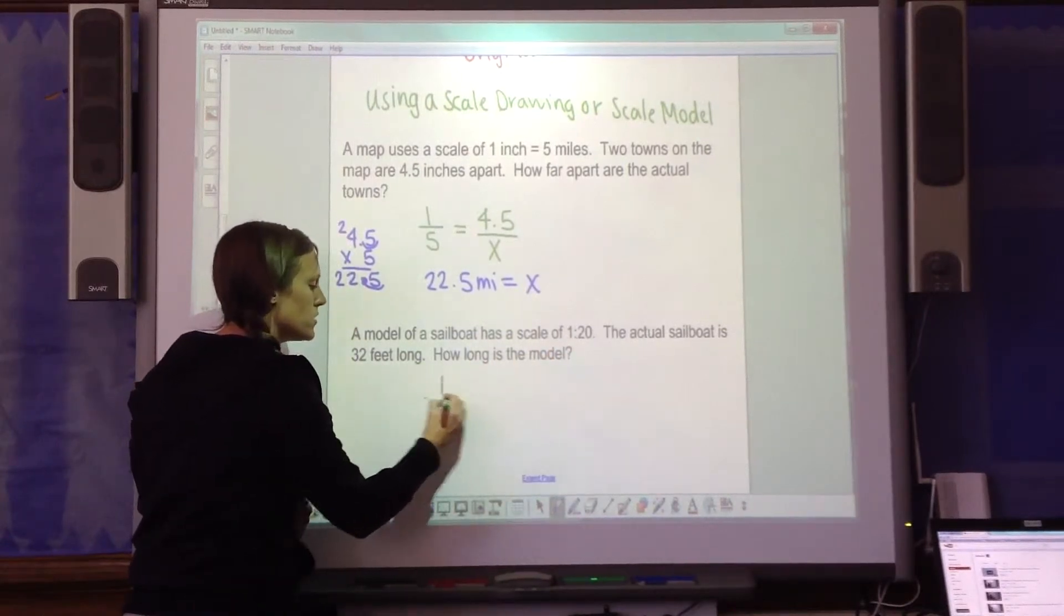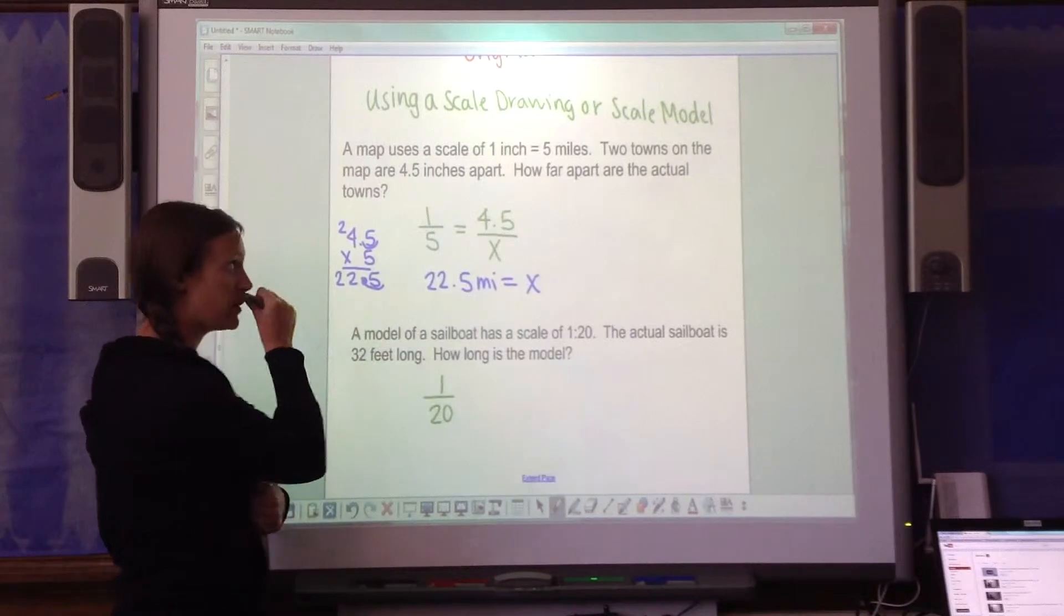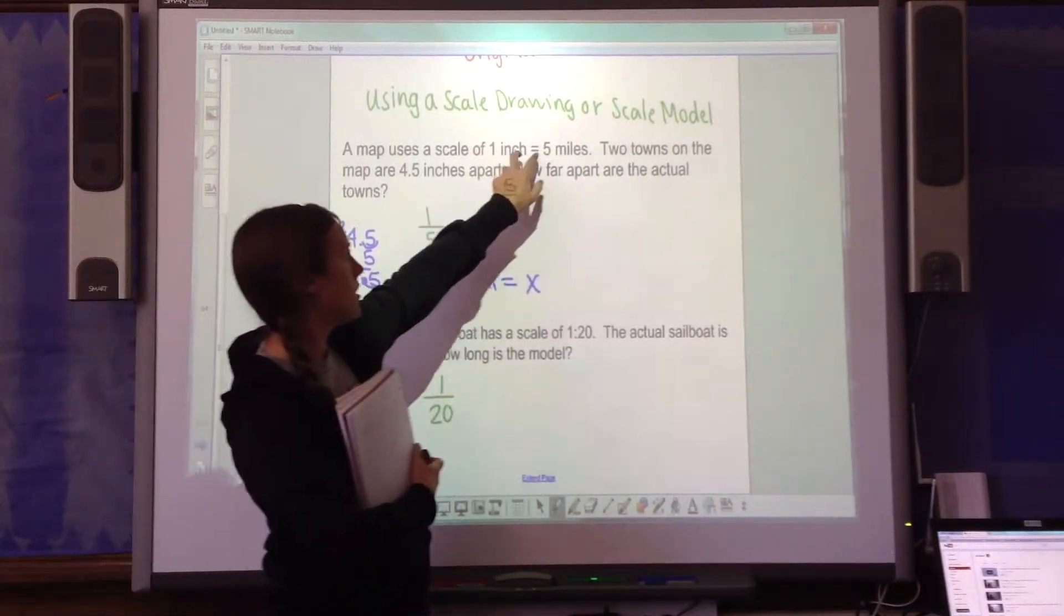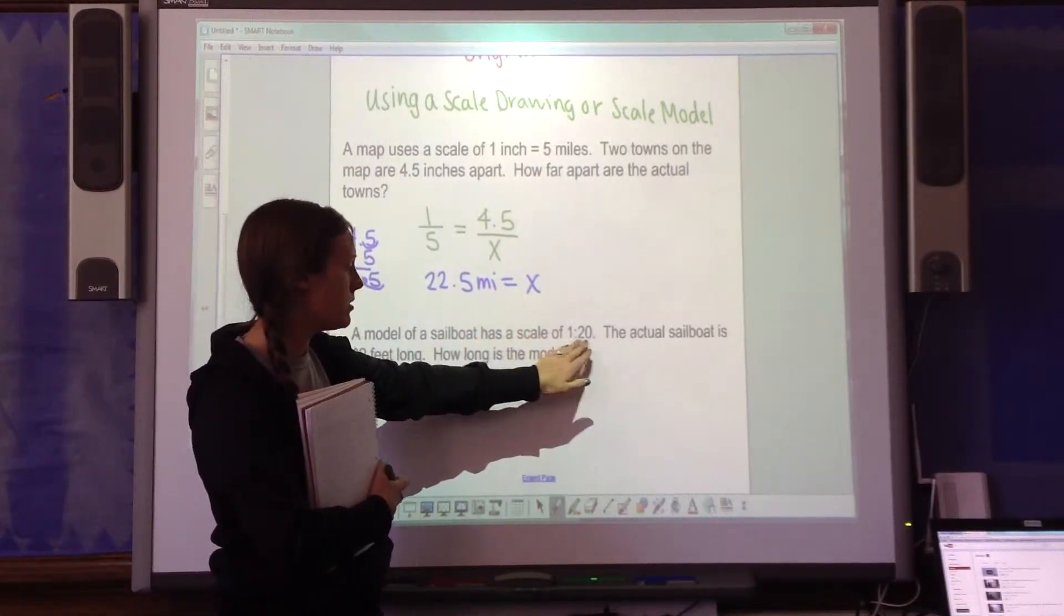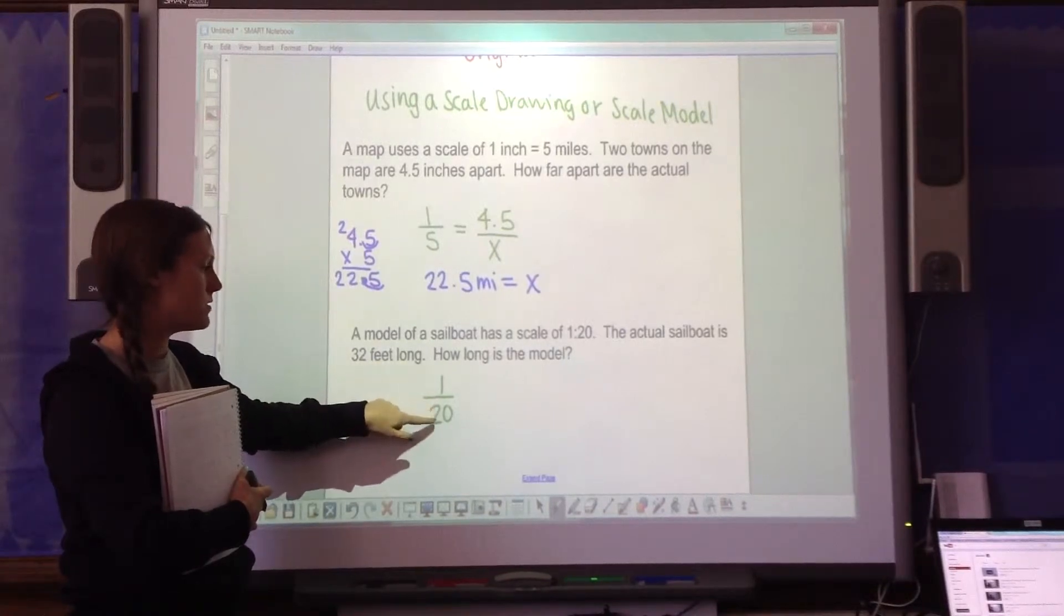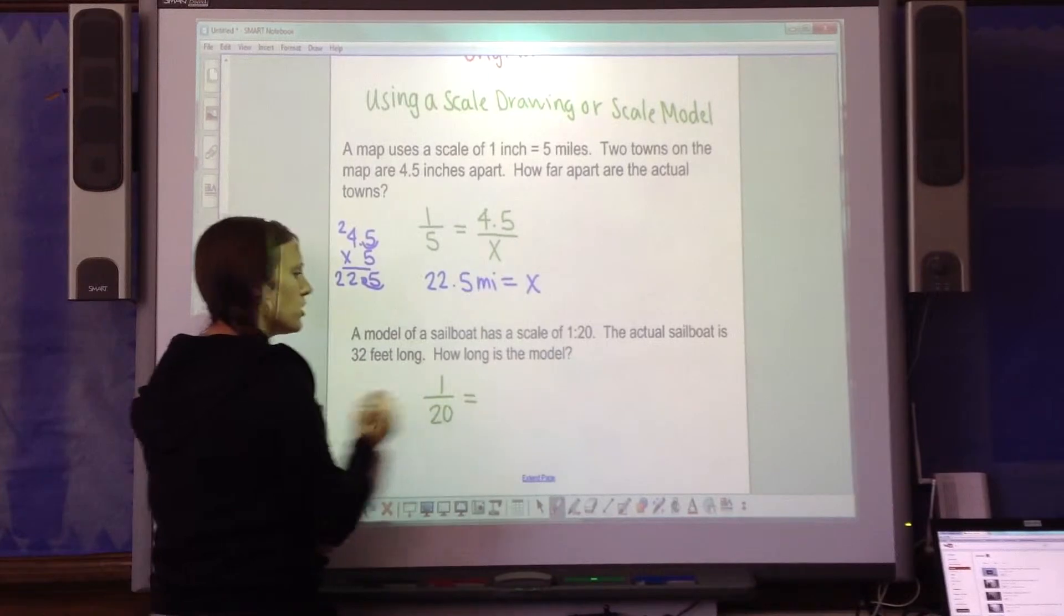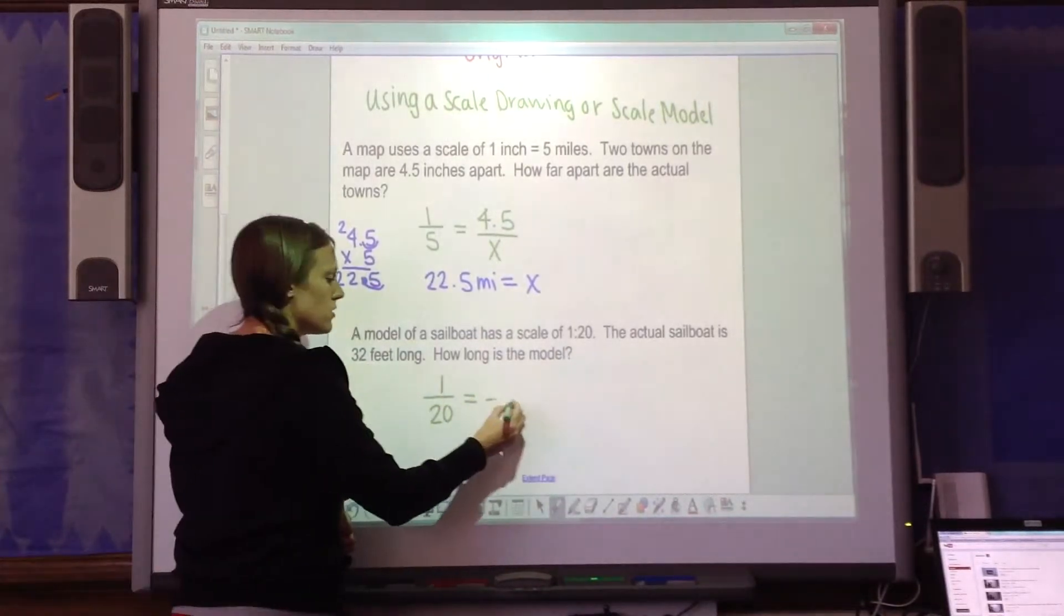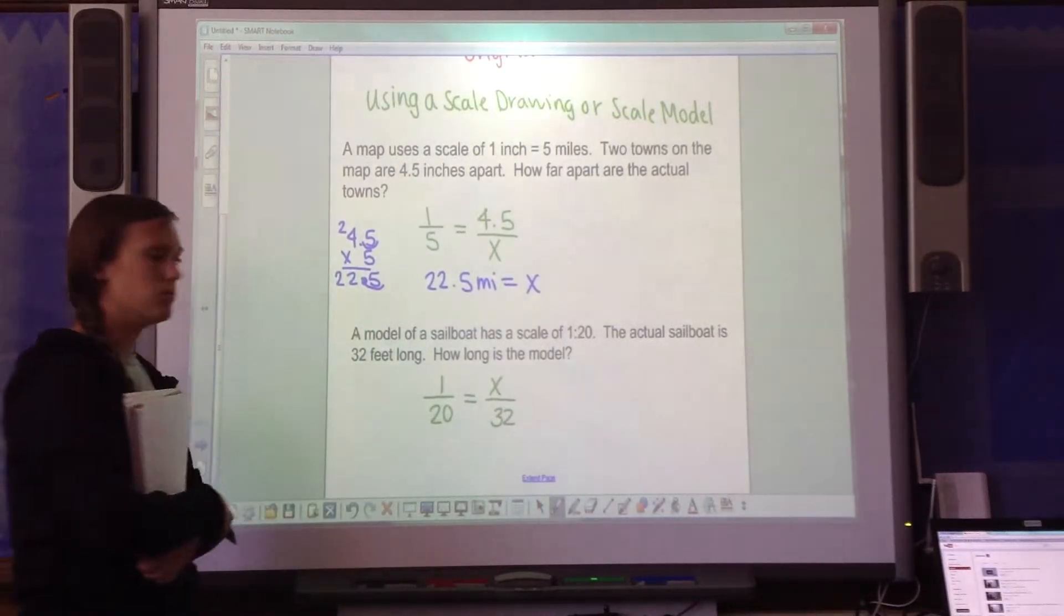So my first ratio is 1 to 20. And do you see how this doesn't have any measurements with it? Because neither of them are labeled, they both are whatever the other label is. So 1 foot is equal to 20 feet. For my other ratio, I'm going to realize that the actual sailboat is 32 feet long. So that's going to go in the denominator. I want to know what the model is. So that's going to go over here.